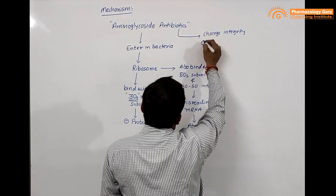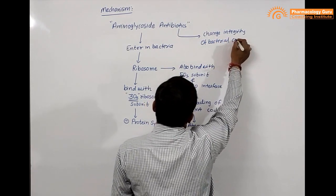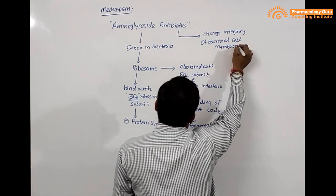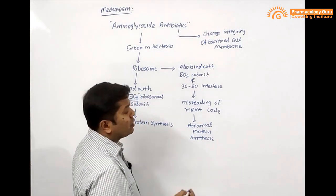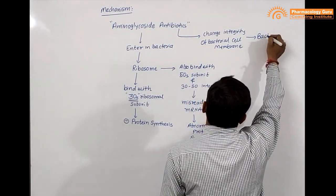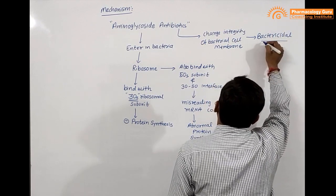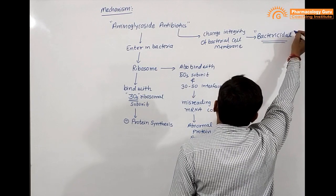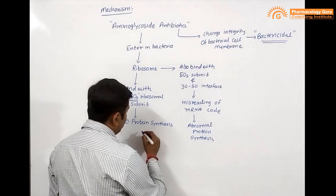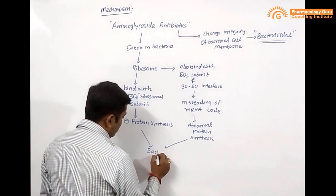In a dose-dependent manner, they change the integrity of the bacterial cell membrane — meaning they interfere with the normal function of the bacterial cell membrane. This interference leads to the bactericidal effect, while the two ribosomal mechanisms are responsible for the bacteriostatic effect.